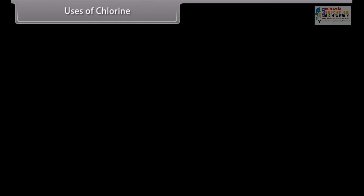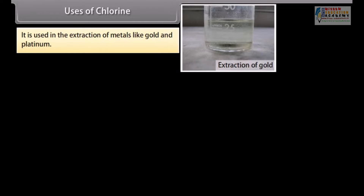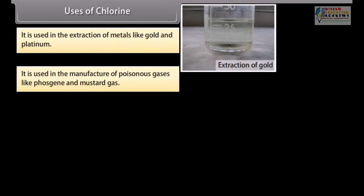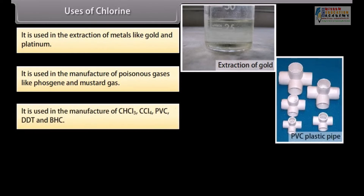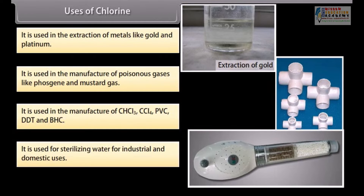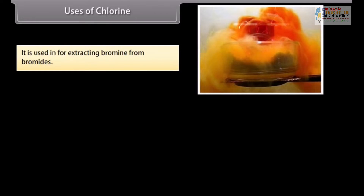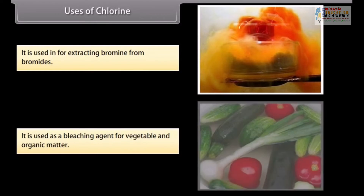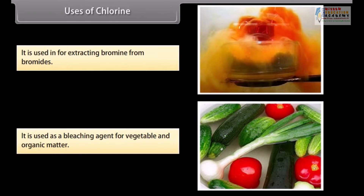The important uses of chlorine are: it is used in the extraction of metals like gold and platinum; in the manufacture of poisonous gases like phosgene and mustard gas; in the manufacture of CHCl₃, CCl₄, PVC, DDT and BHC; for sterilizing water for industrial and domestic uses; for extracting bromine from bromides; and as a bleaching agent for vegetable and organic matter.